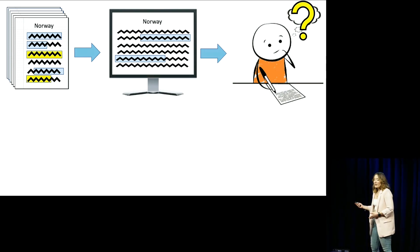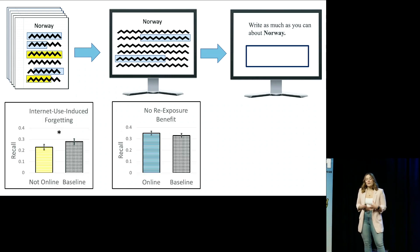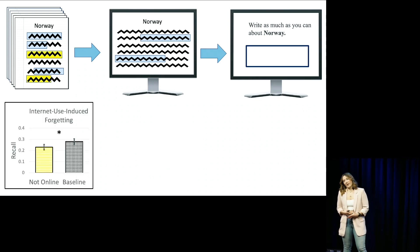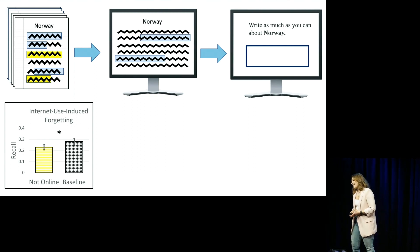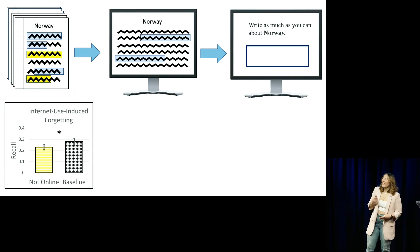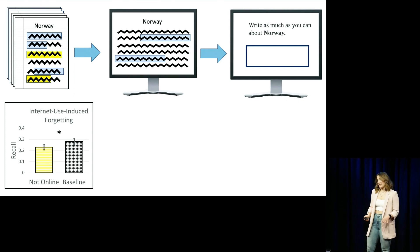Well this is exactly the question that we asked and answered in the lab. We actually found this astonishing effect called internet-use-induced forgetting. This basically means that if you already know something about a topic, and you look for more information online, you end up forgetting more of the information that wasn't repeated online than if you hadn't looked for more information in the first place.